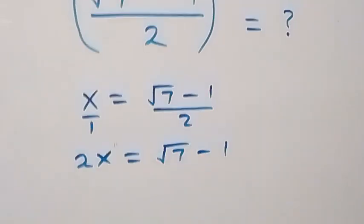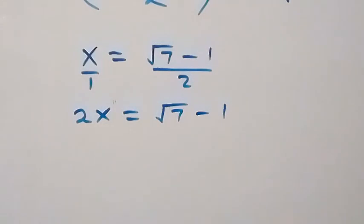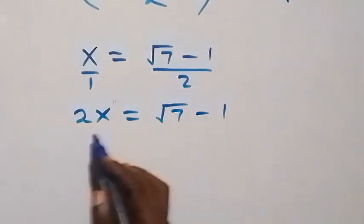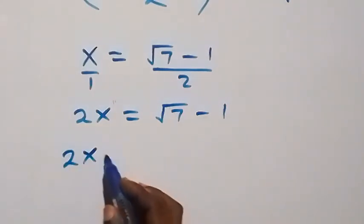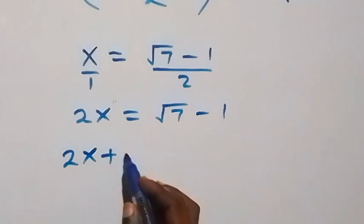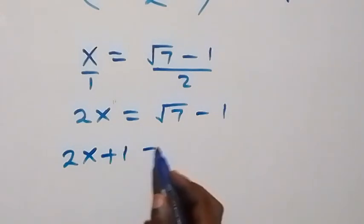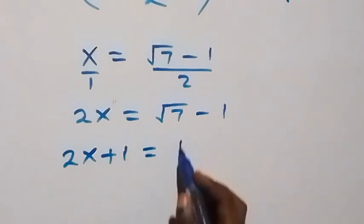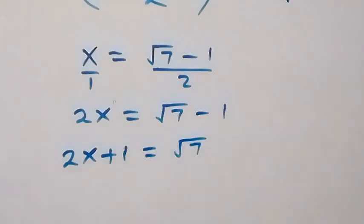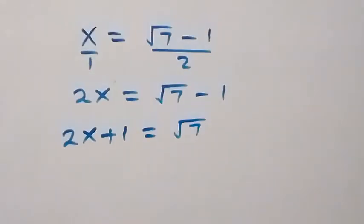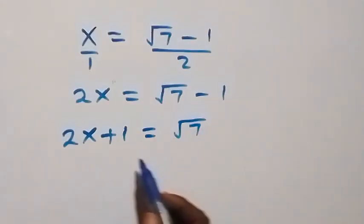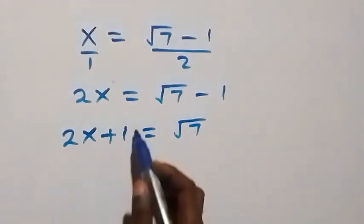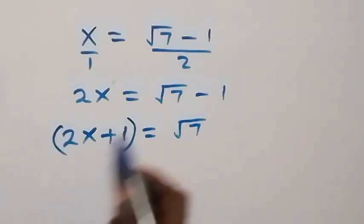From what we have here, let's take minus 1 to the other side — it becomes plus — and we have 2x plus 1 equals √7. To get rid of this root, we introduce a square on both sides.